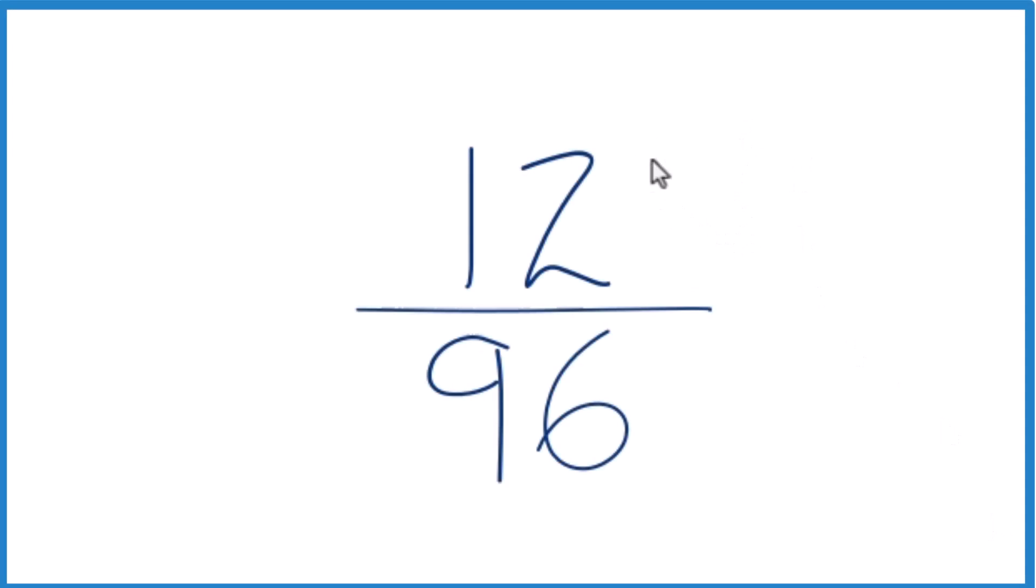Let's simplify the fraction 12/96. Here's how you do it. What we want to do is find another fraction that's equivalent to 12 divided by 96. It's just that we've reduced or simplified it down to lowest terms. It'll have the same value.